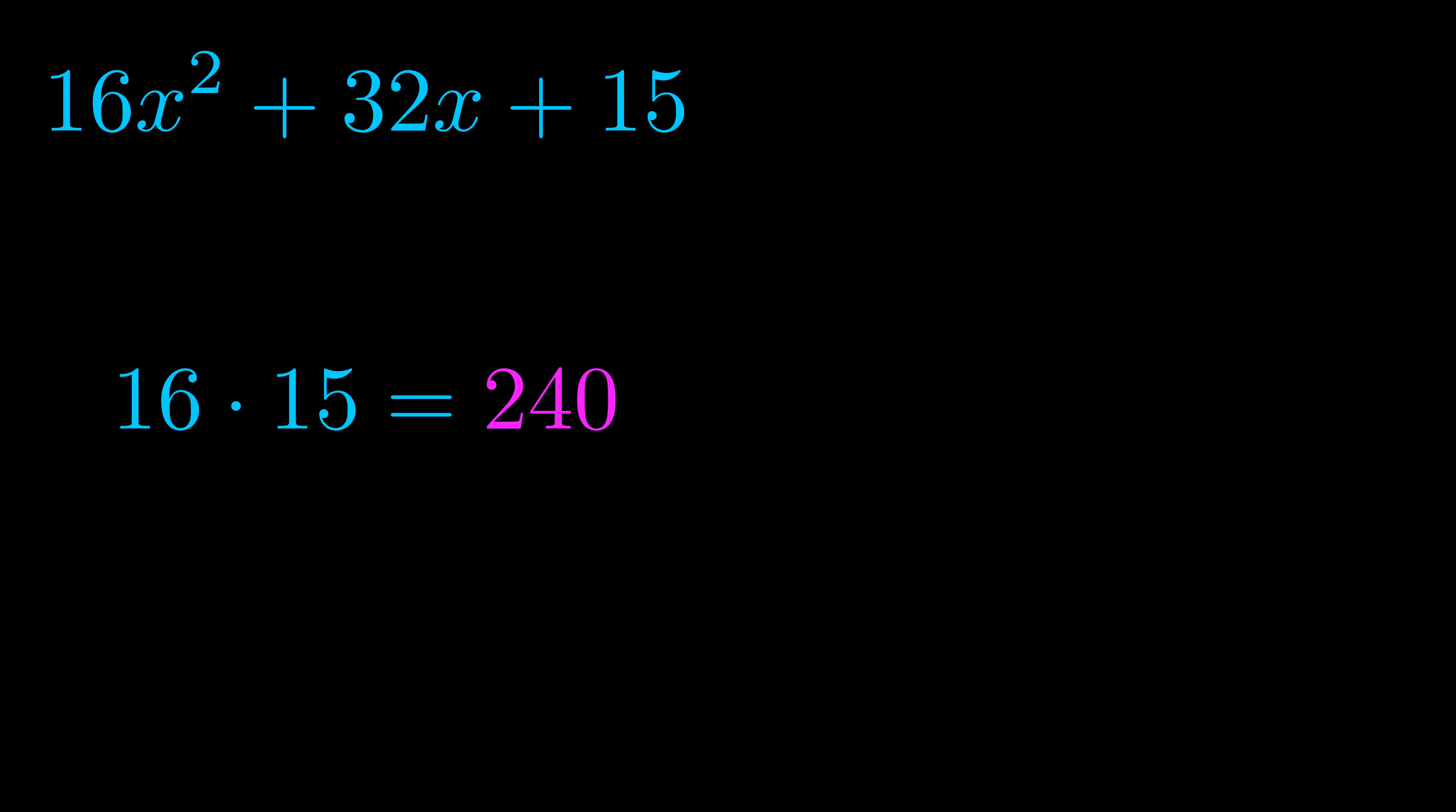Step two is to try to find all of the pairs which multiply to this number. Now turns out you don't really need to find all of them, but go ahead and write down as many numbers as you can that multiply to the magenta value for now. Pause the video and resume when you're ready to continue.